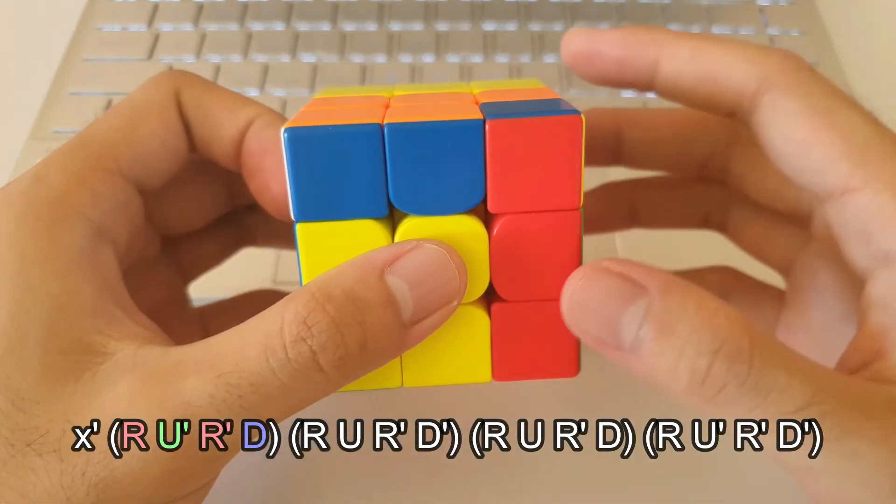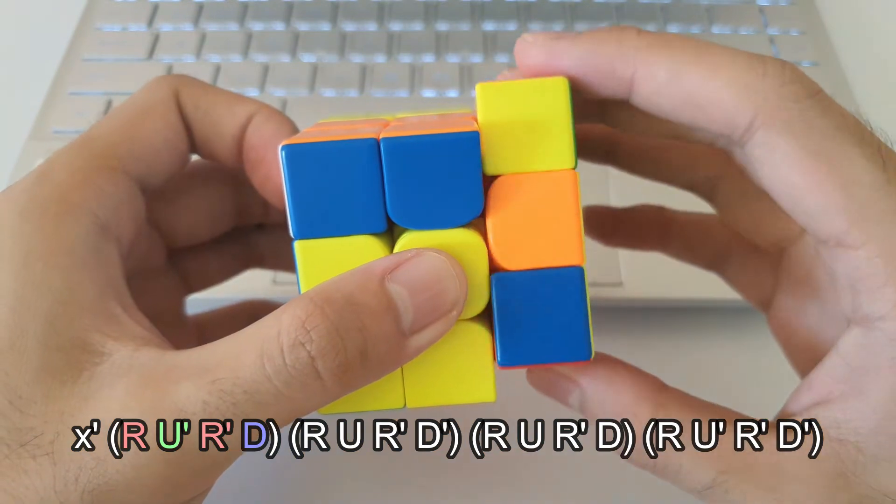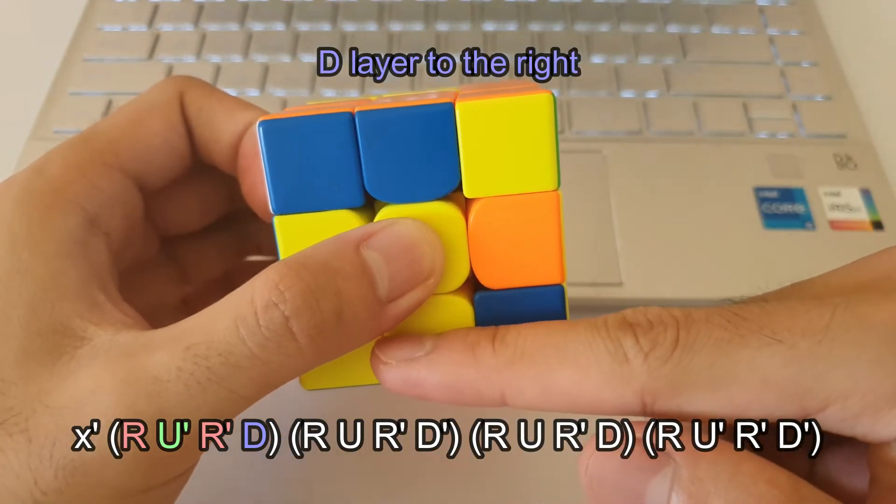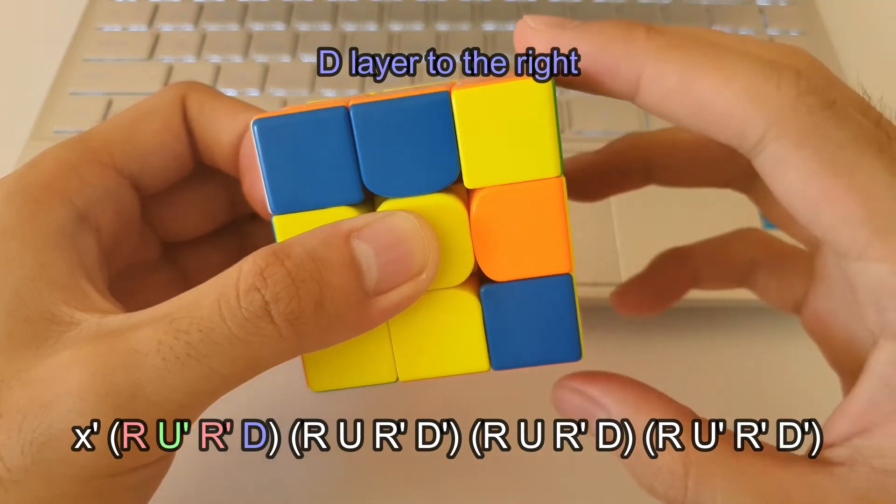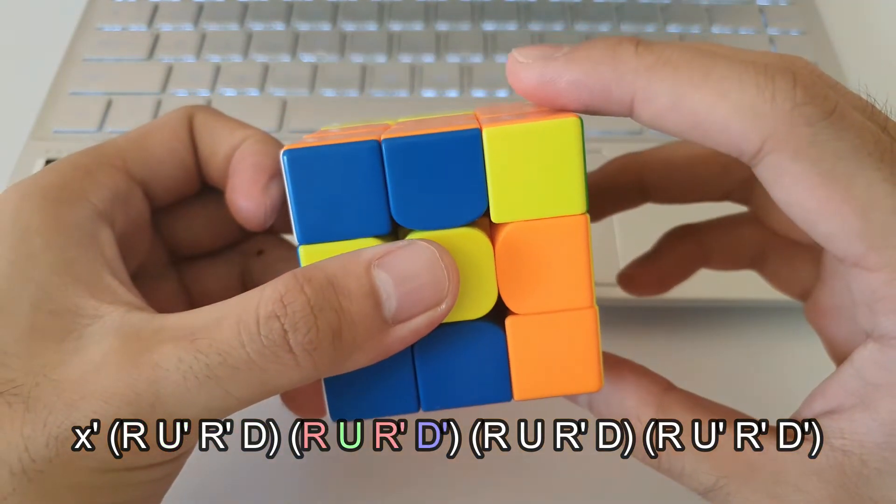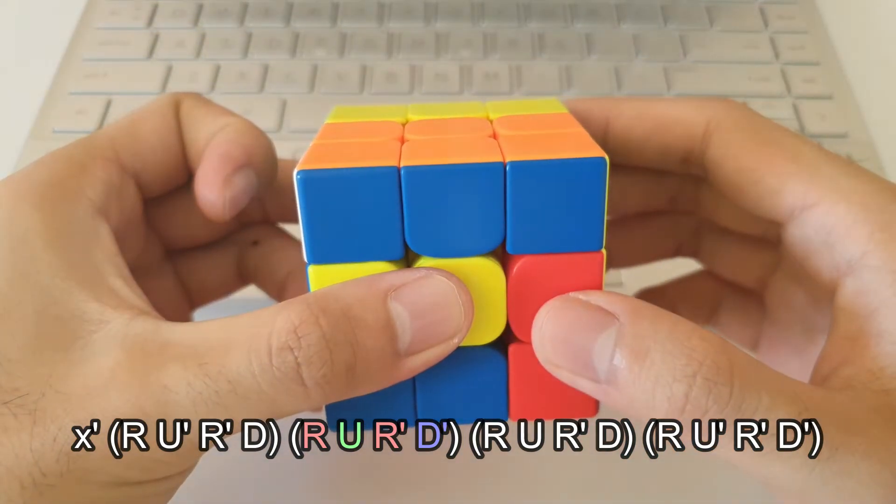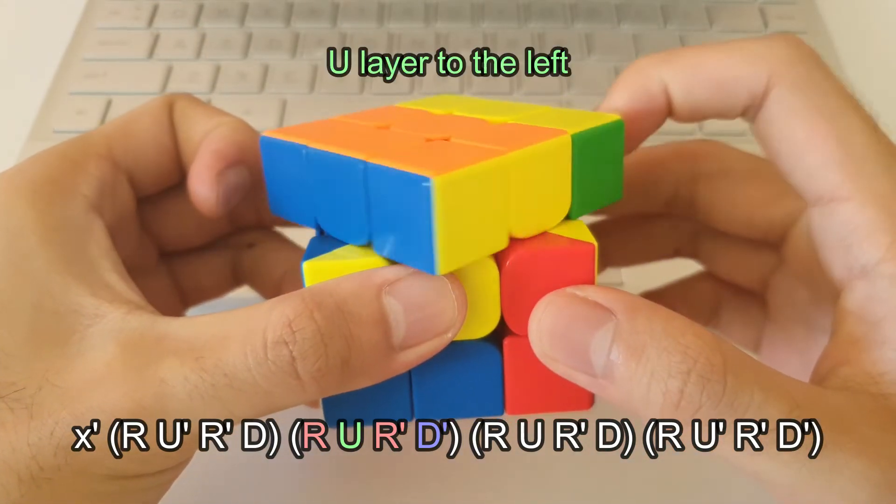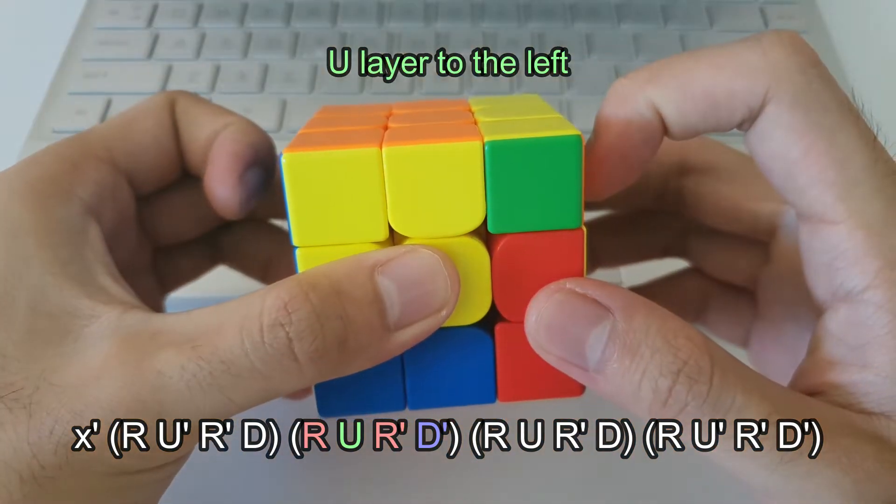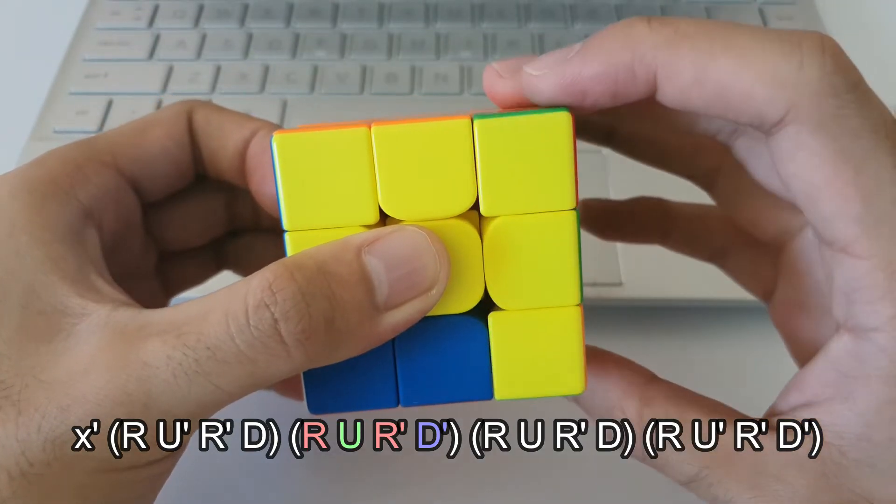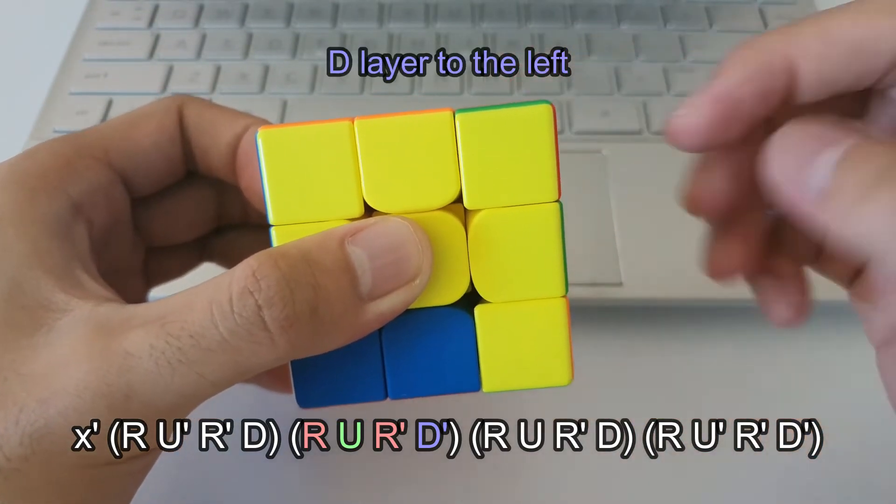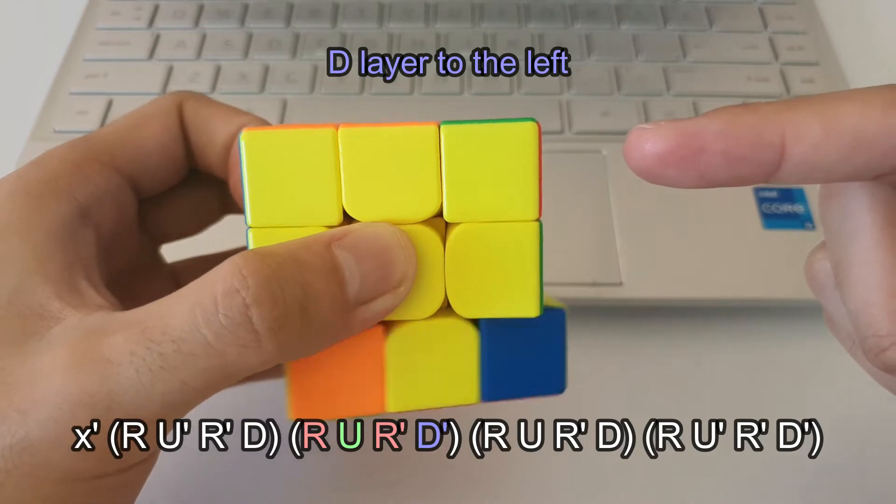Next up, it's followed by R prime followed by the D prime which also means that the bottom layer goes towards the right side, like that. Next up, we have R again, with U which means that the top layer goes towards the left. R prime followed by D prime which means that the bottom layer goes towards the left, like that.